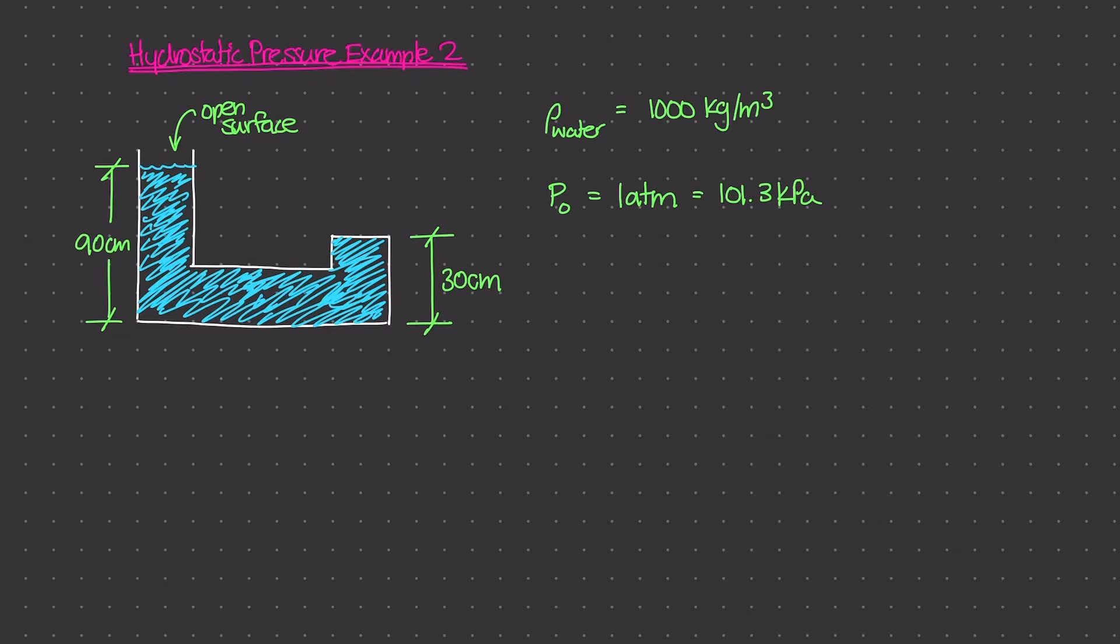This is going to be a little bit easier than the one we just visited. In this one we have this weird looking container that is open to the atmosphere on one side, but is actually closed on the other side. So this right here is a cap, and that cap is at 30 centimeters from ground level, and the open surface here is at 90 centimeters from the ground level.